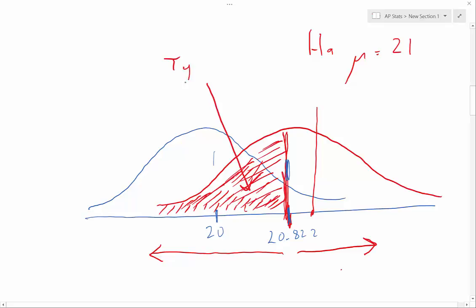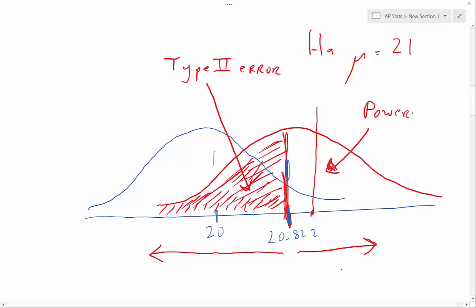This is the probability of a type 2 error: the probability of wrongly concluding that the null hypothesis applies when in fact it should be some different alternate hypothesis. The power of the test is the likelihood of properly rejecting H0 when the alternate hypothesis applies. In an ideal world, we want the power to be as big as possible. In this example, there's something like a 40% chance of erroneously accepting the null hypothesis, so the power of this test is about 60%.